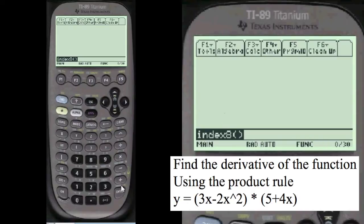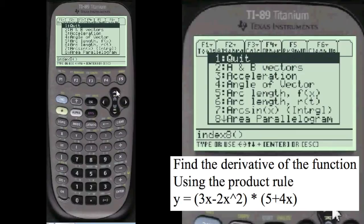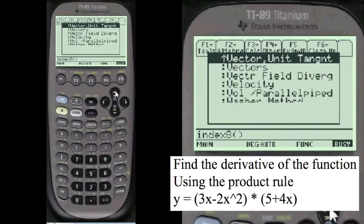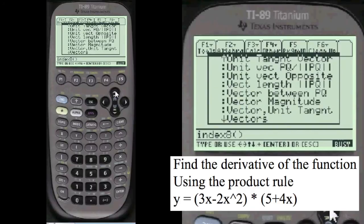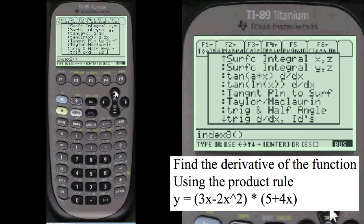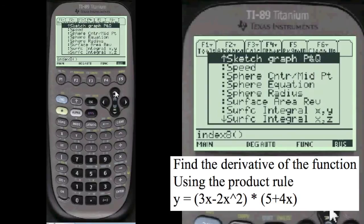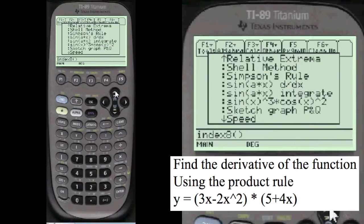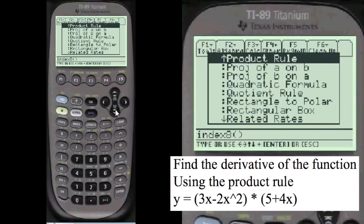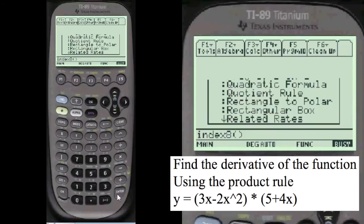Index 8 to get to my menu. I'm going to go up because product rule is closer to W than A, so you can go up and get to the bottom of the alphabet. These are all alphabetical. Get to the P. There's product rule. Click. It shows you the formula.